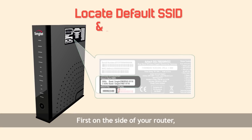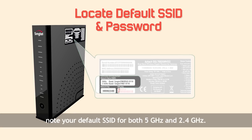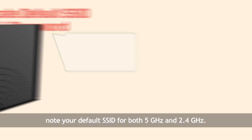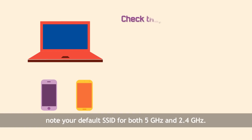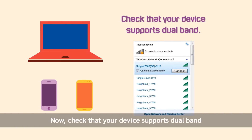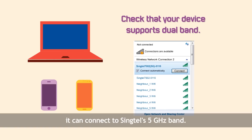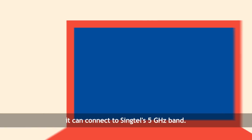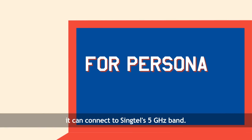First, on the side of your router, note your default SSID for both 5GHz and 2.4GHz. Now, check that your device supports dual band. If 2 SSIDs appear on its Wi-Fi tab, it can connect to Singtel's 5GHz band.